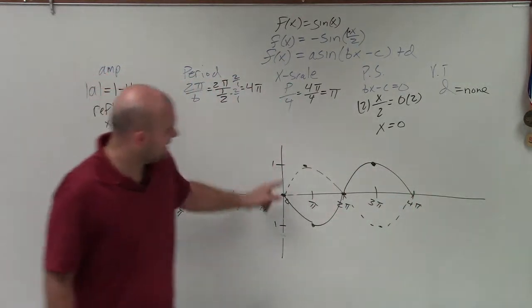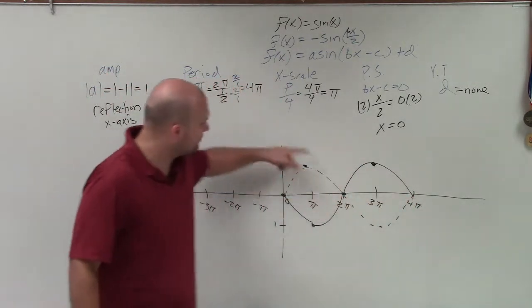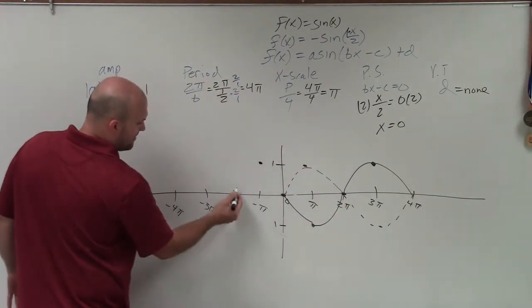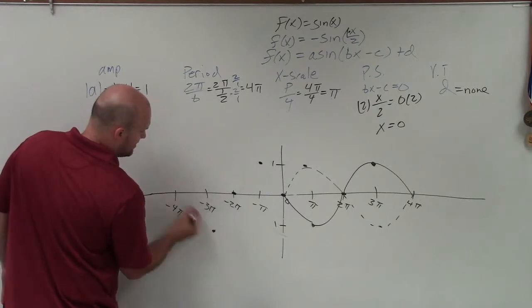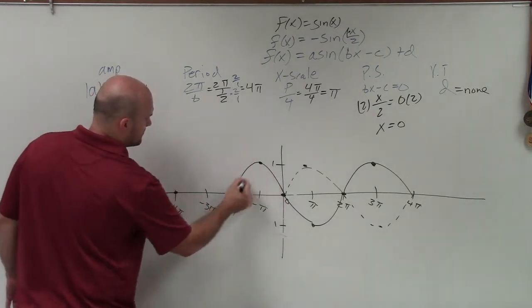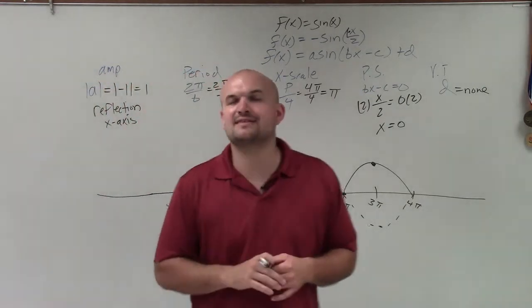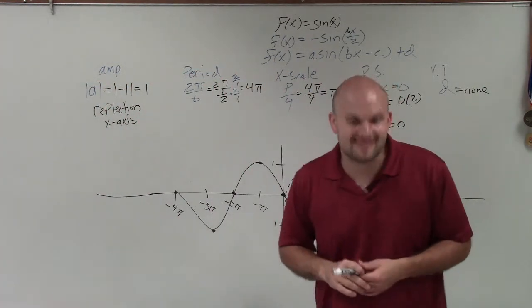So therefore, you guys can see I graphed kind of what the initial graph would look, and then I reflected it. Then just continuing on to the pattern, I'm going to go to the max, intercept, min, intercept. And there you go, ladies and gentlemen. That is how you graph the sine graph with the reflection and change in period. Thanks.